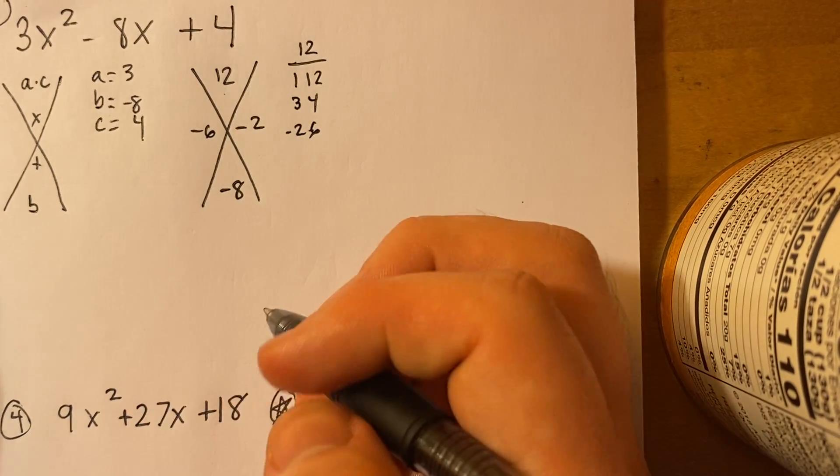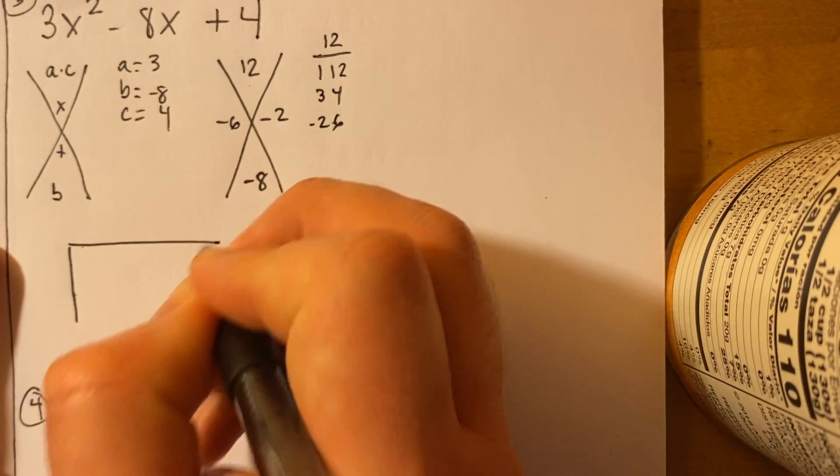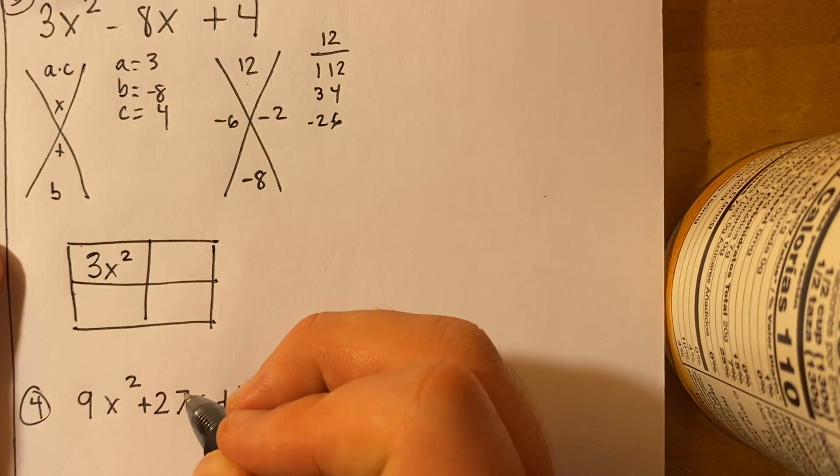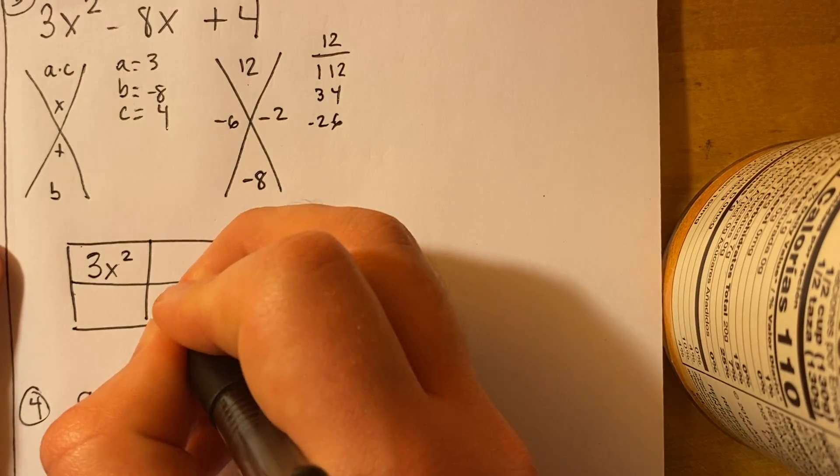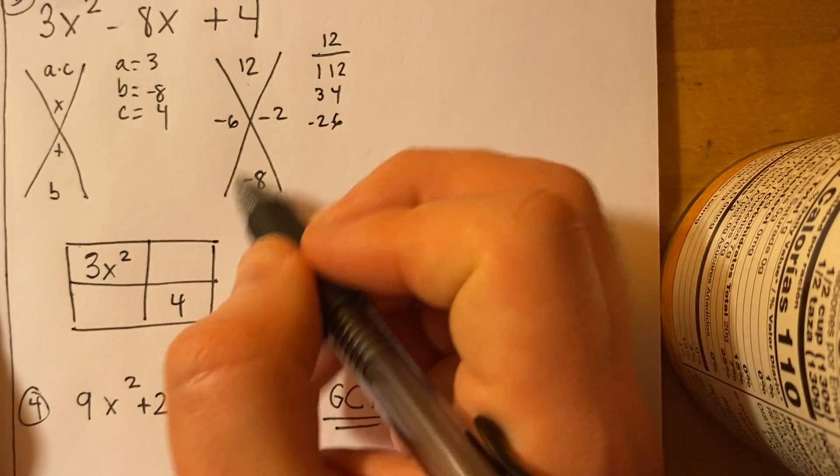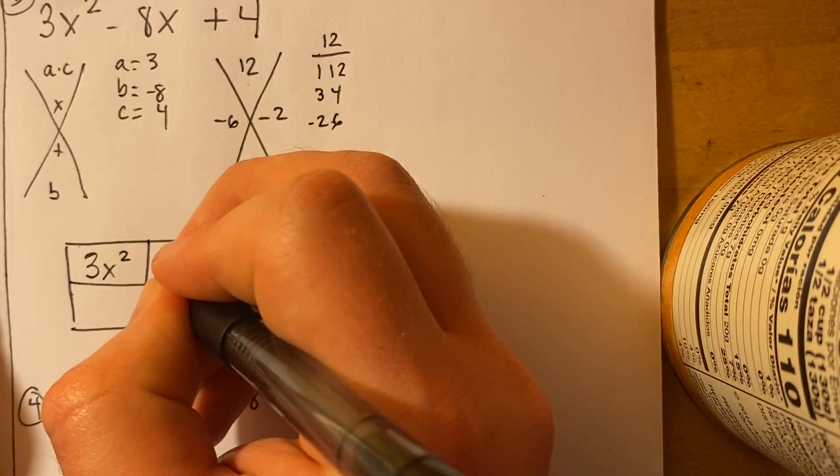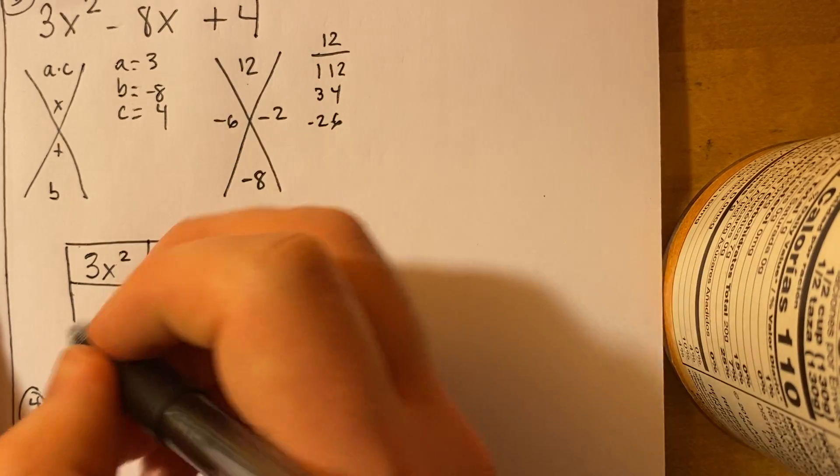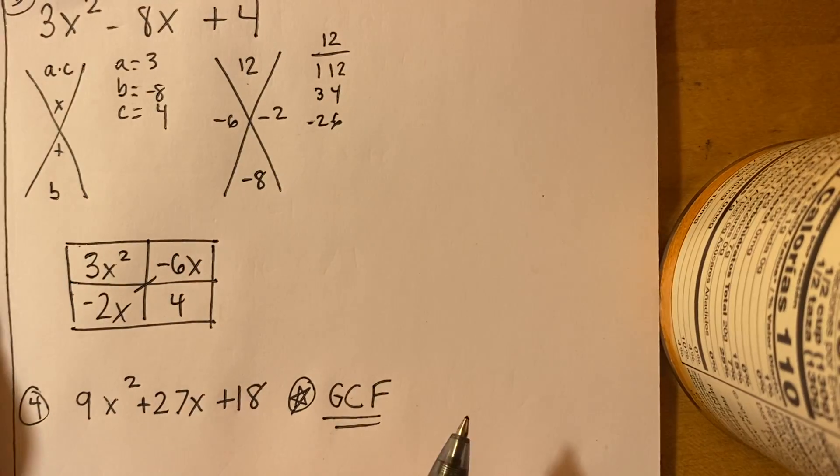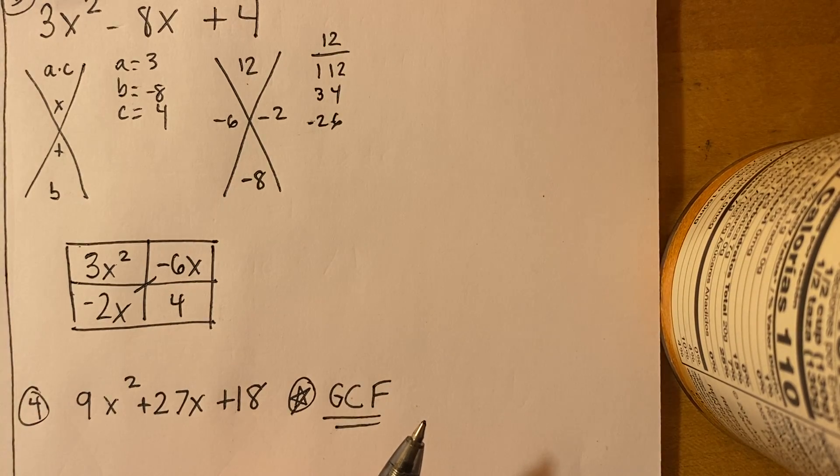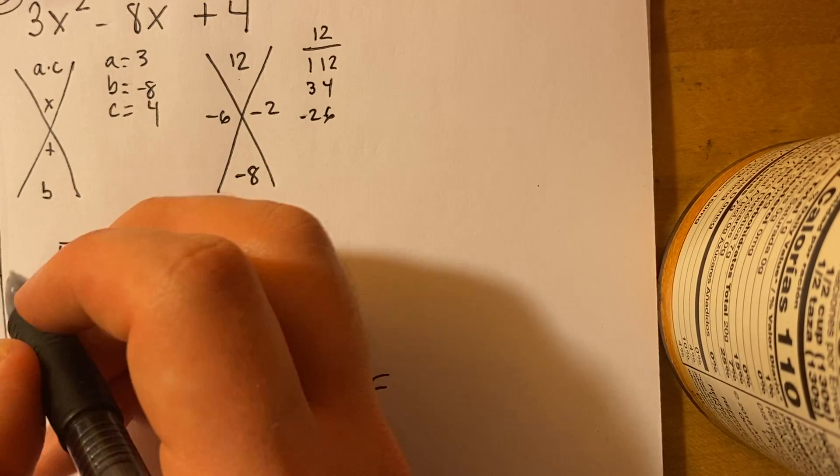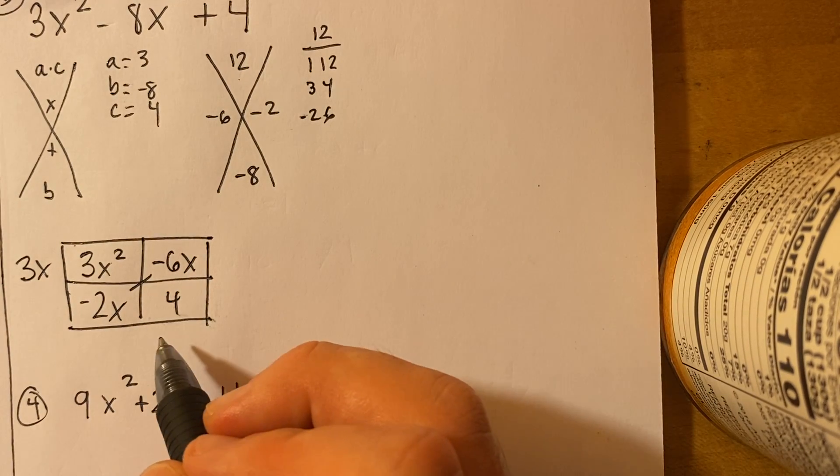So then I'm going to go ahead and make my 2 by 2 box. And I'm going to put the top term up there, 3x², and then I'm going to put the c term on the bottom right corner, 4. And so I have a 6 and a 2. Well, the 6 is going to go with the 3, because 6 and 3, they can be friends. So I'm going to do negative 6x, and then I'm going to do the negative 2 with the 4. So negative 2x. Notice how negative 6x plus negative 2x equals negative 8x. So we're doing something right here.